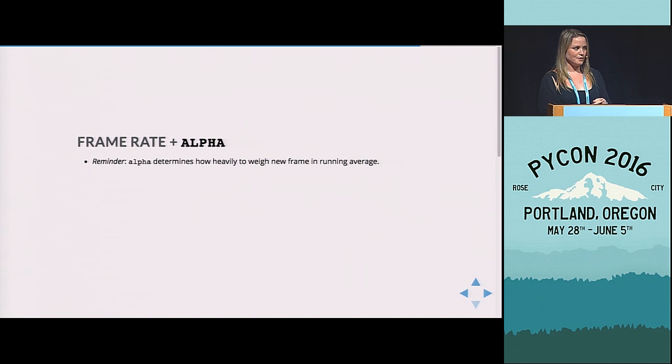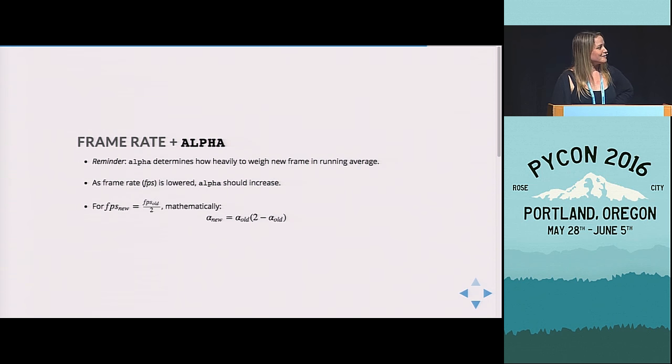And so you can also think of the running average or the alpha controlling how long of a history you're remembering in your model of the background. And so you may want to weight more heavily each new frame if you have a lower frame rate so that it is taking up the same amount of time in that history. So just as a crude back of the envelope, if you were to have your frame rate and kind of considered almost weighting each new frame twice, you would end up having our original alpha was about 0.2 and it becomes about 0.36 afterwards.